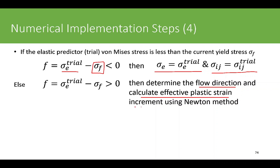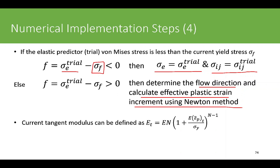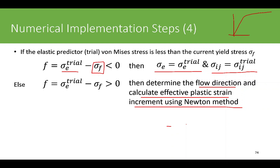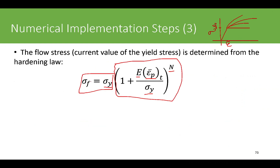We use the Newton method as in the previous no-hardening case. The key change now is the current tangent modulus: with an elastic region followed by hardening, the hardening slope changes throughout the deformation. We define the tangent modulus E_t as Young's modulus E times the hardening exponent n times the quantity one plus (E times the accumulated equivalent plastic strain at time t over sigma_y), raised to the power n minus one.